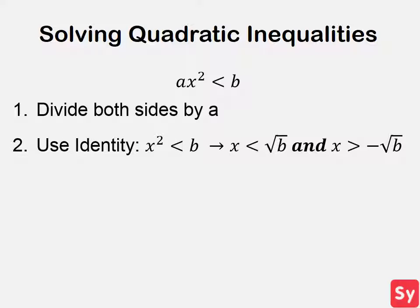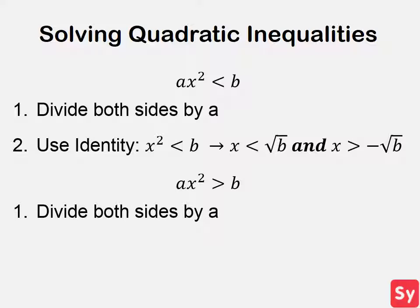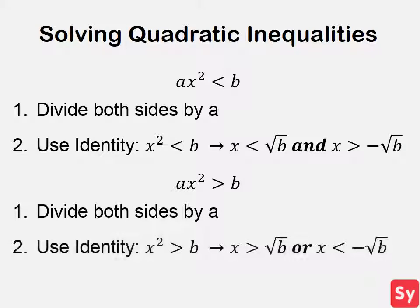The next case is when the quadratic inequality is in this form, where the sign is just switched. First, divide both sides by a, then use this identity to solve the inequality. If the inequality involves the equal bar, like if it's greater than or equal to, you can still use the identities — just make sure you add the equal bar to the inequality signs.